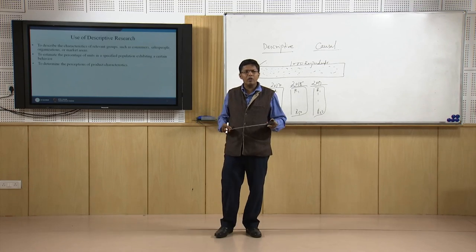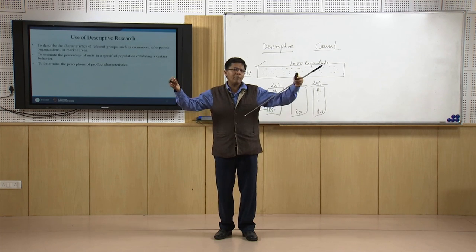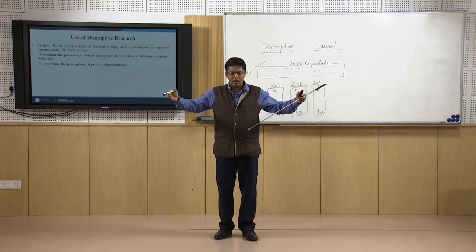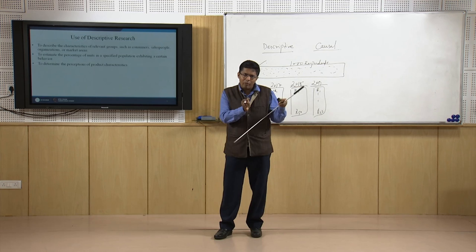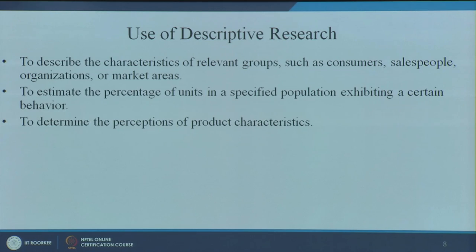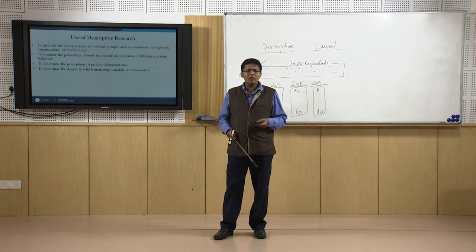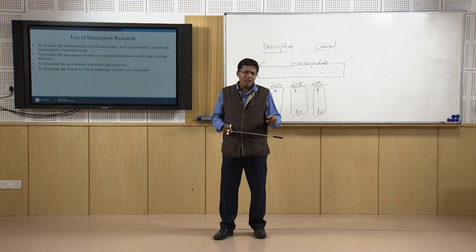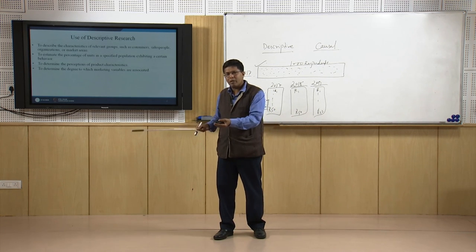Descriptive research is used to determine perceptions of product characteristics — for example, whether umbrella branding is good or bad. Japanese companies like Mitsubishi and Matsushita go for umbrella branding, where different product ranges fall under one brand. On the contrary, companies like Procter & Gamble and Hindustan Unilever use individual brands, so if one brand does not perform well it does not affect the others. Researchers also study whether packaging affects consumer behavior, whether sales promotion is effective, whether celebrity endorsement matters for consumer products versus industrial products, and the degree to which marketing variables are associated.